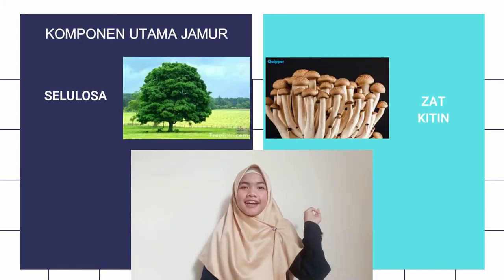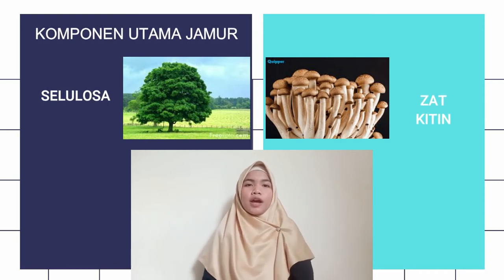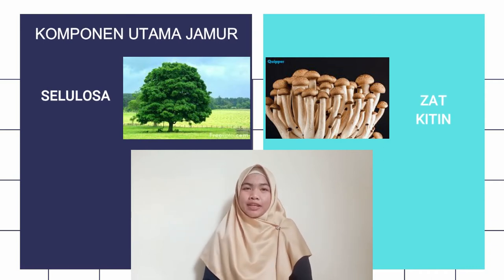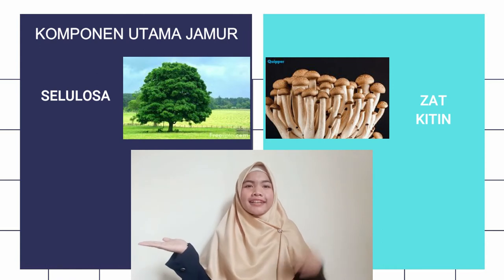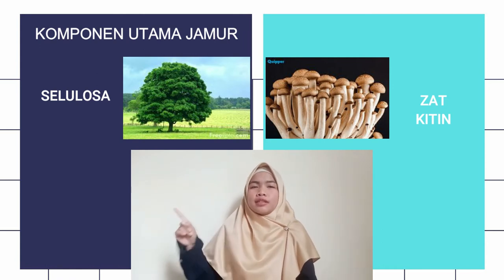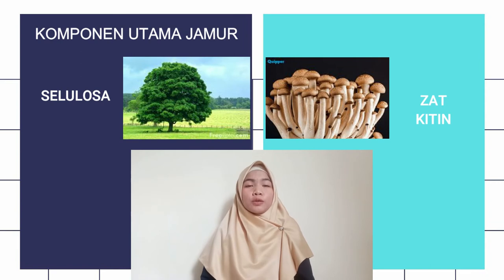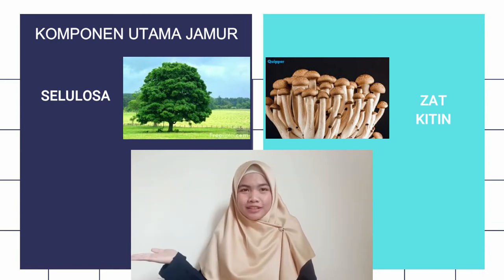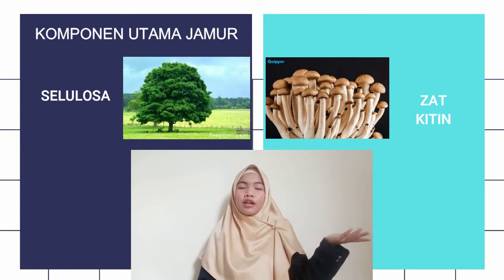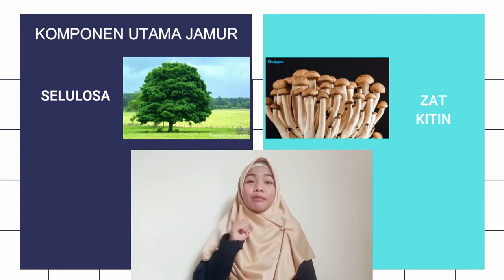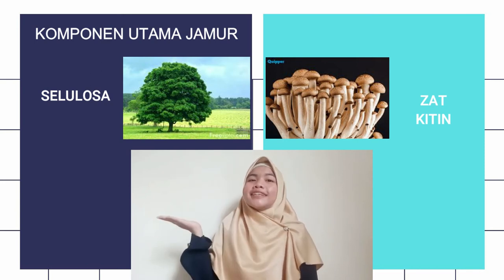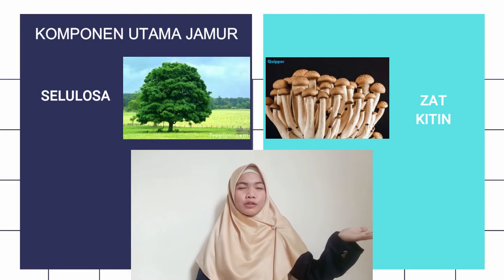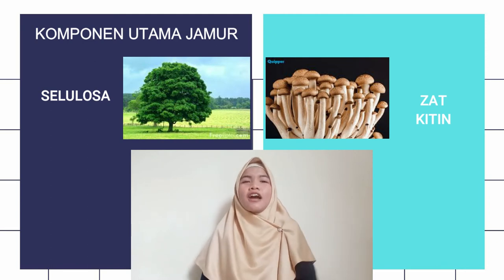Sekarang kita masuk ke karakteristik yang ketiga, yaitu tubuh jamur yang komponen utamanya terdiri dari zat kitin. Ini yang membedakan antara tumbuhan dan jamur. Untuk tumbuhan, komponen utamanya adalah selulosa. Dan untuk jamur, komponen utamanya yaitu zat kitin. Jangan kebalik ya: tanaman komponen utamanya selulosa, dan untuk jamur komponen utamanya zat kitin.